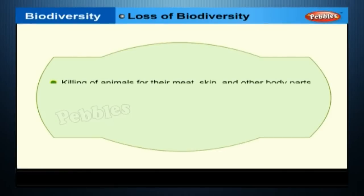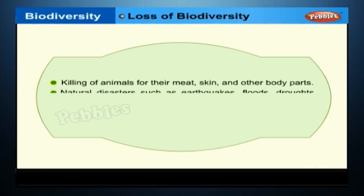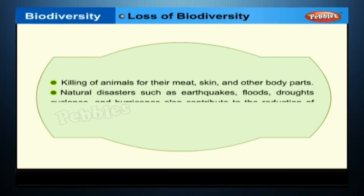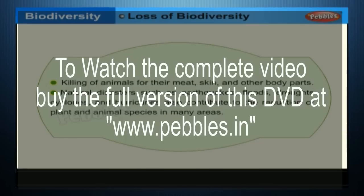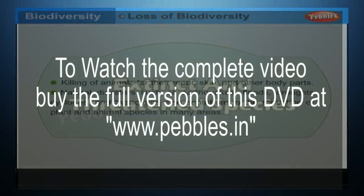Killing of animals for their meat, skin and other body parts. Natural disasters such as earthquakes, floods, droughts, cyclones and hurricanes also contribute to the reduction of plant and animal species in many areas.